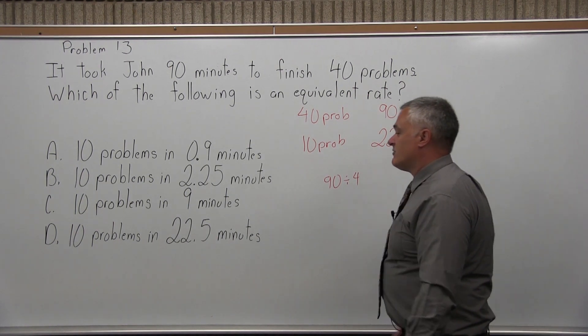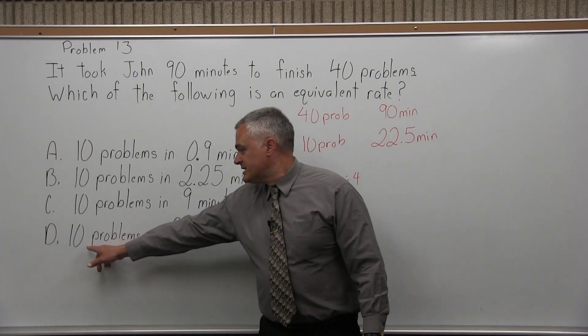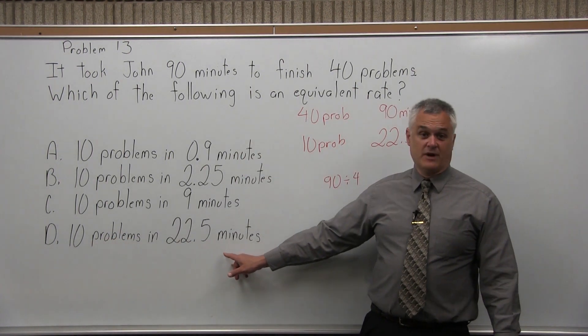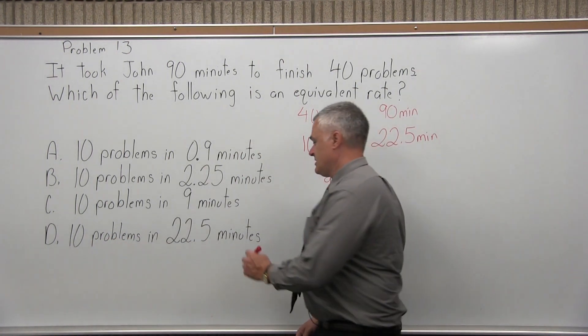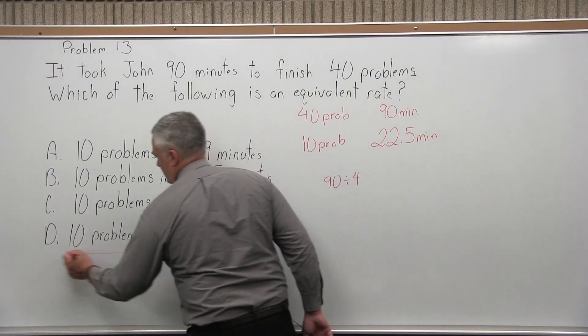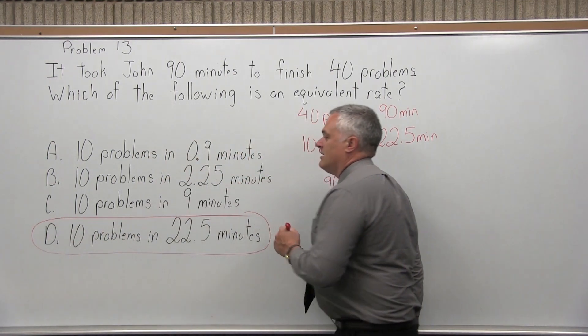Now, if you look through the list of problems, the list of options, 10 problems in 22.5 minutes is one of the options, it's option D. So the answer to problem number 13 is option D.